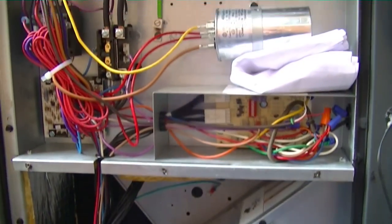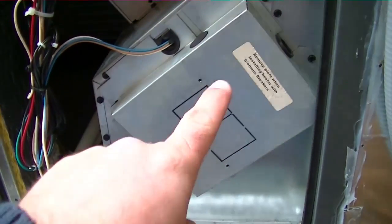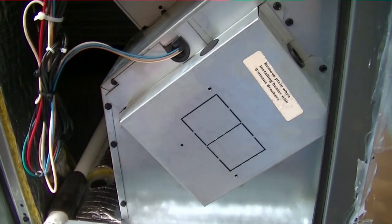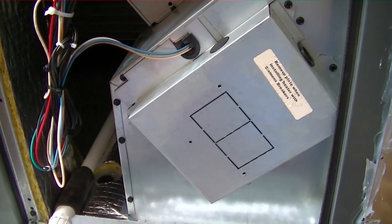As you see we have the inside of our package unit. The heat kit is actually inside of here. There's a knockout for breakers. There's no breakers on this particular heat kit.